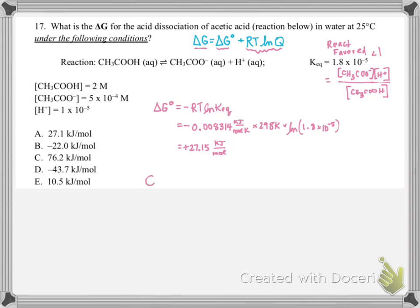We can start by just making sure we know what our Q is. For Q, we're going to plug in the concentrations they've given us into the same expression we would use for Keq — it's just that our concentrations aren't at equilibrium. We can solve for Q, and our Q is 2.5 times 10 to the minus 9. This value is much, much less than our Keq value, so that tells me we must have too many reactants and the reaction is going to proceed in the forward direction.